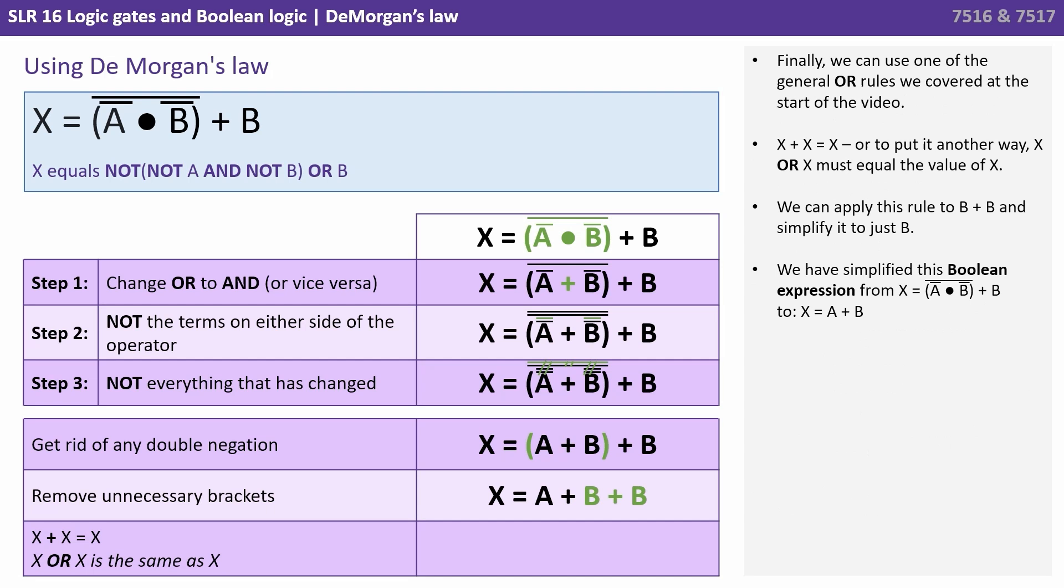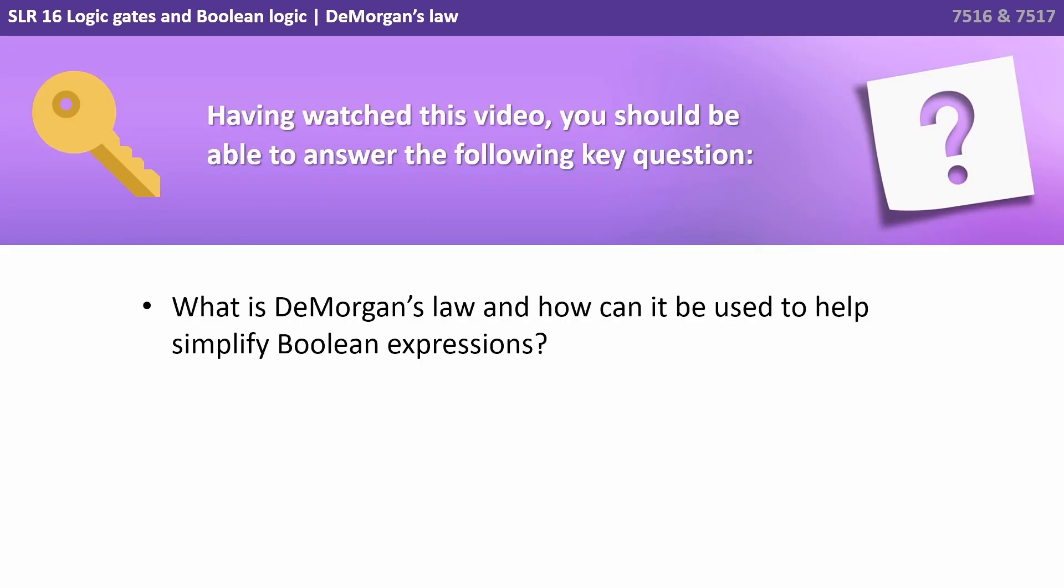We've simplified the original Boolean expression at the top of the screen down to X equals A or B. Having watched this video, you should be able to answer the following key question. What is De Morgan's Law and how could it be used to simplify Boolean expressions?